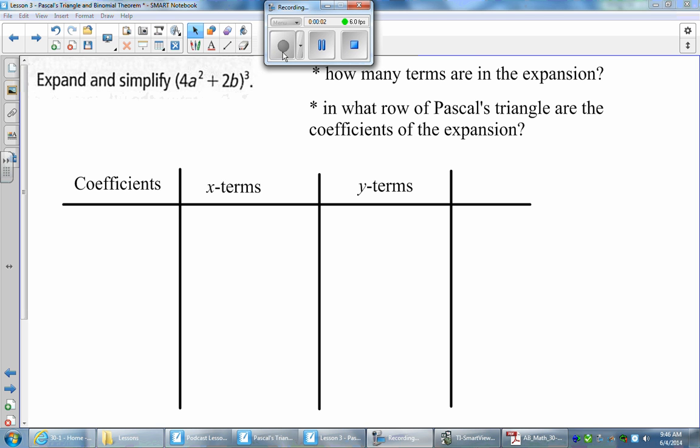Let's try another question where we have to apply the binomial theorem to expand a binomial of a higher degree. We have the binomial 4a squared plus 2b, and we're expanding it to a power of 3. So that's my n value here.